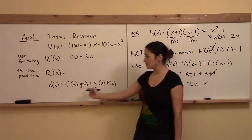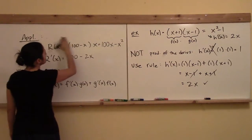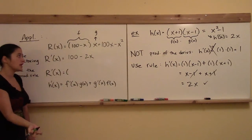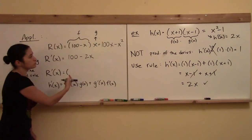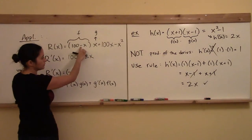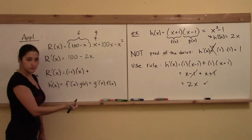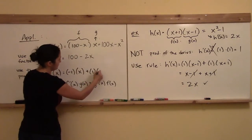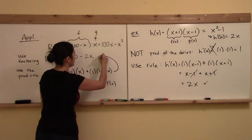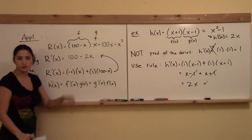Now using the product rule: let f of x equal 100 minus x and g of x equal x. The derivative f prime of x is minus 1 — that's the coefficient of the linear term. We multiply that by g of x and leave it alone. The derivative of g of x is just 1, and we leave f of x alone. Combining like terms: we get minus x plus x plus 100, which gives us 100 minus 2x — the same answer.